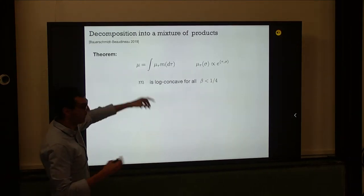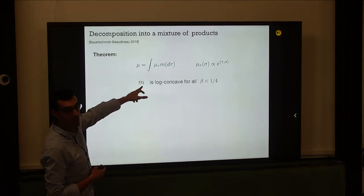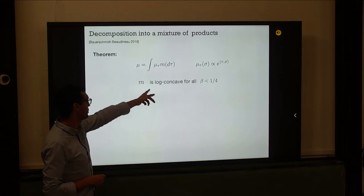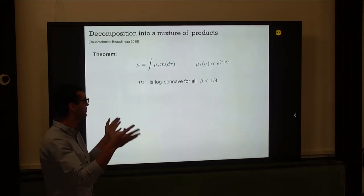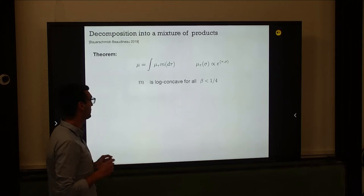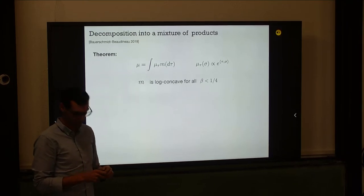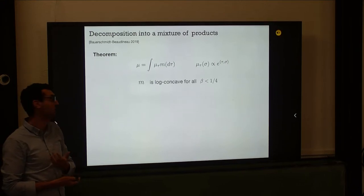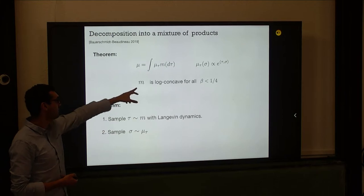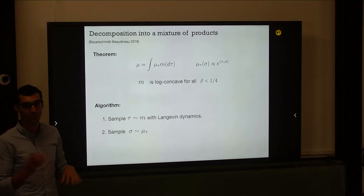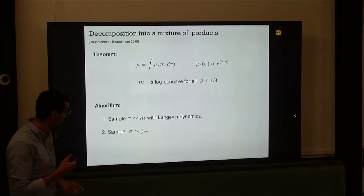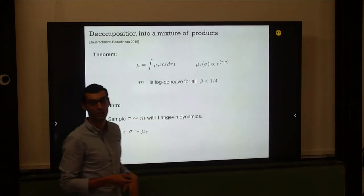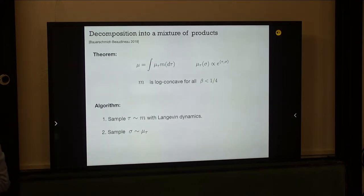This measure on external fields is strongly log concave for beta smaller than one fourth — the same regime where Ofer's result works. Given a description of M, the algorithm is obvious: sample an external field from M using Langevin dynamics, which mixes due to strong log concavity, and then once you get M, sample from the product measure.